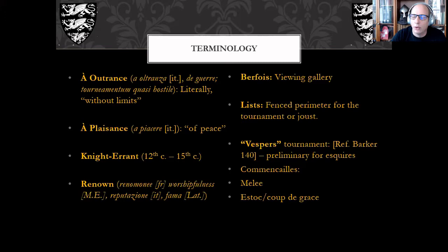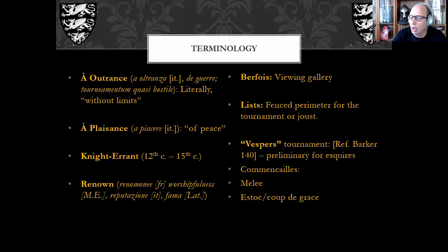Knight errant is basically the concept of a knight going around from place to place earning renown through his actions. Renown has various names: renommée in French, worshipfulness in Middle English, reputazione in Italian, and fama in Latin — which also has legal connotations derived from renown.